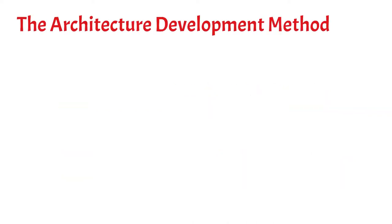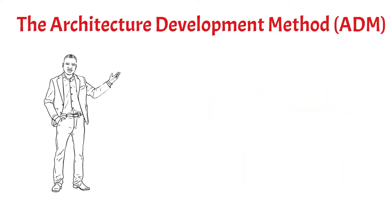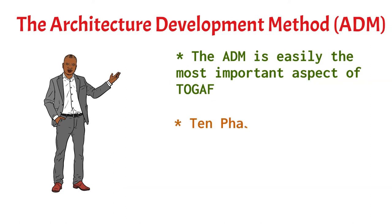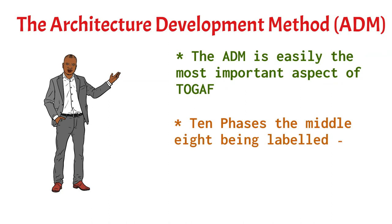The architecture development method or the ADM is easily the most important aspect of TOGAF. It consists of a series of steps that are required to arrive at an architecture for your enterprise. It's typical to say that the ADM has 10 phases: the preliminary phase, phases A to H, and then the requirements management phase.